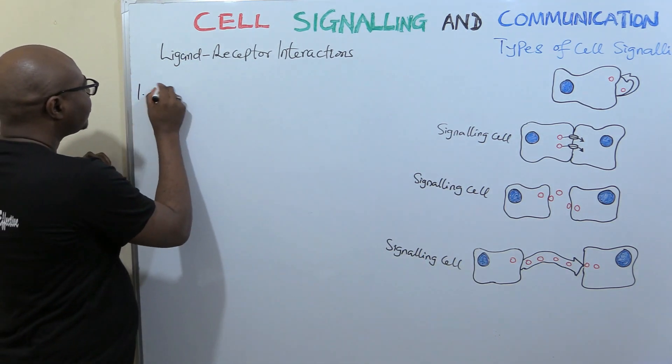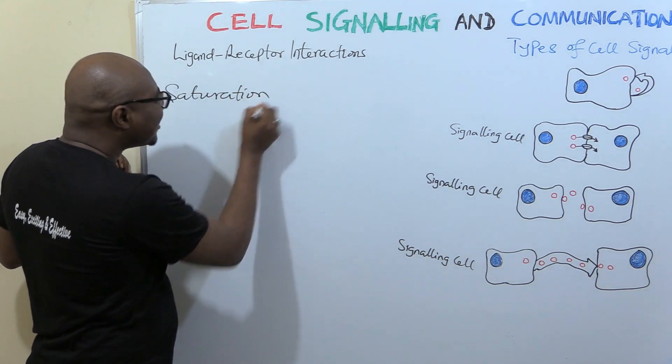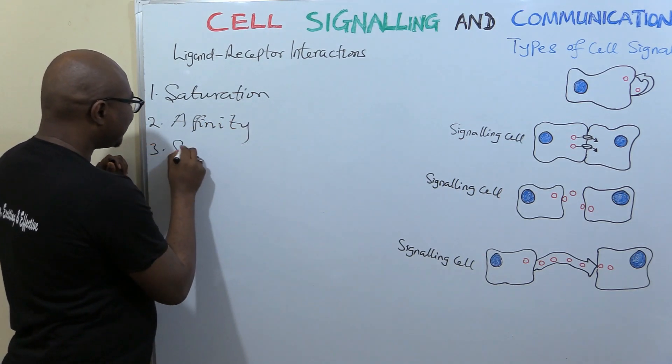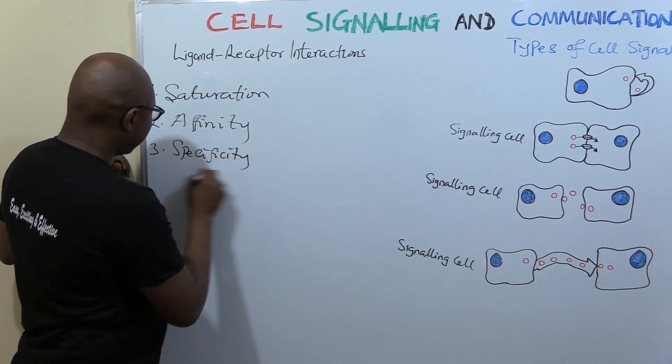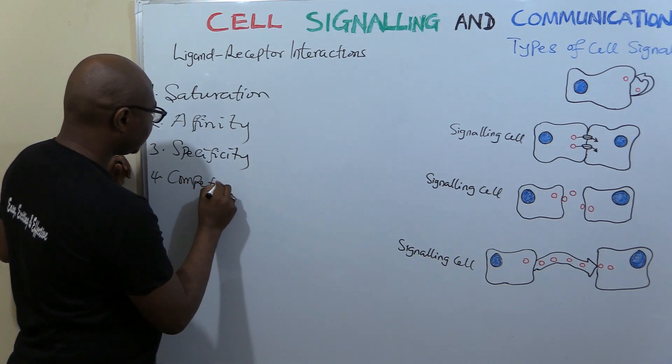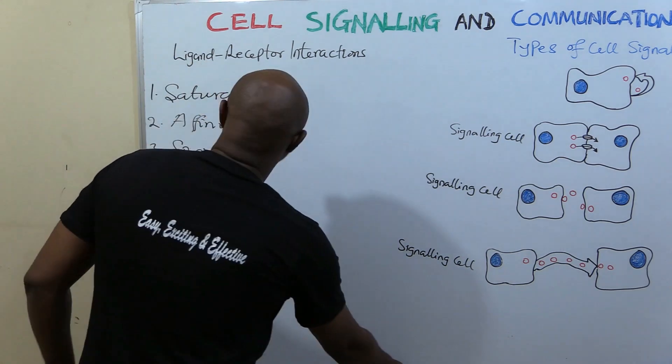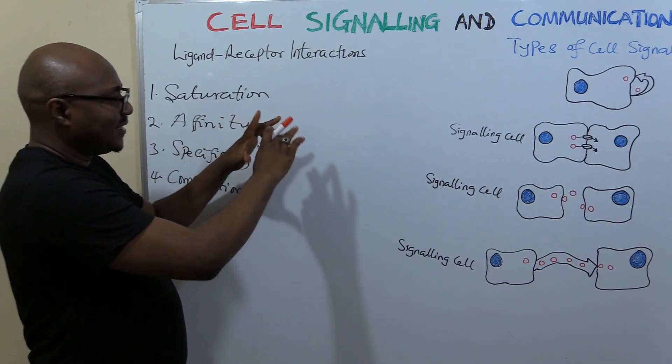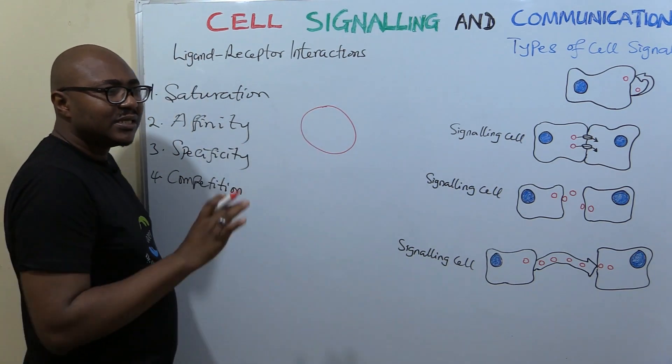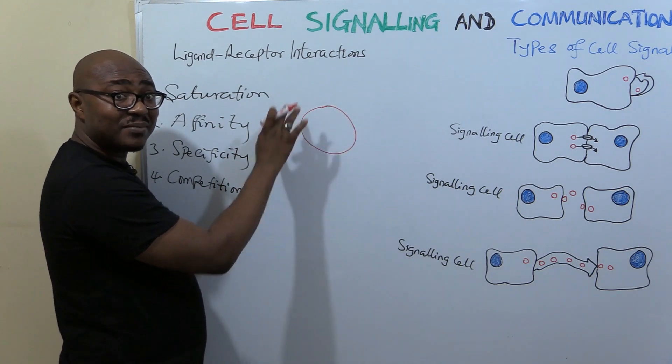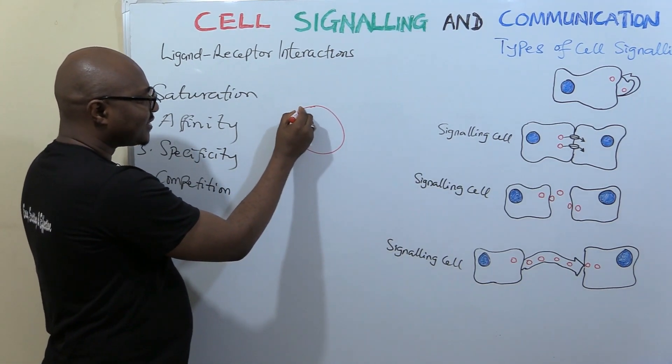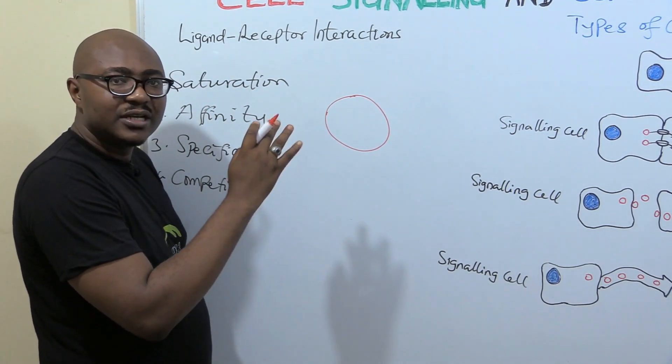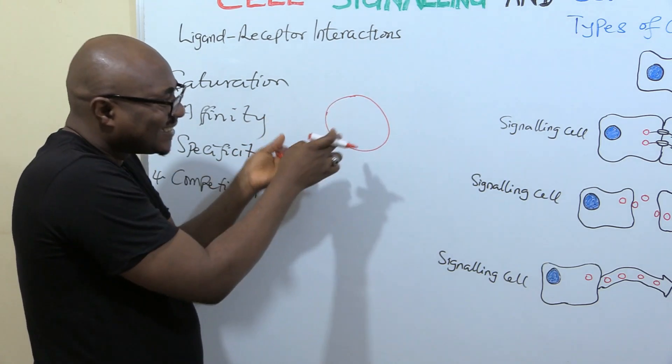Let's look at ligand-receptor interactions. We're trying to talk about some of the characteristics that occur between the relationship of the chemical messenger, when ligand is chemical messenger, and then the receptor. We're going to be talking about four different things: saturation, affinity, specificity, and competition.